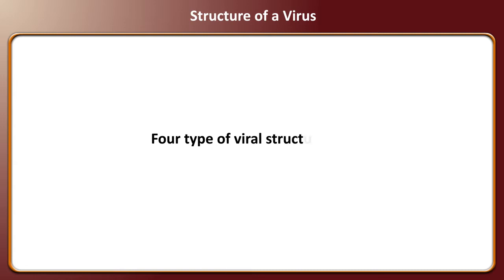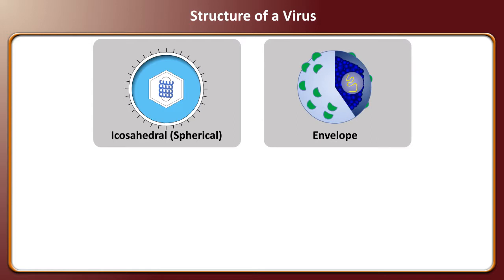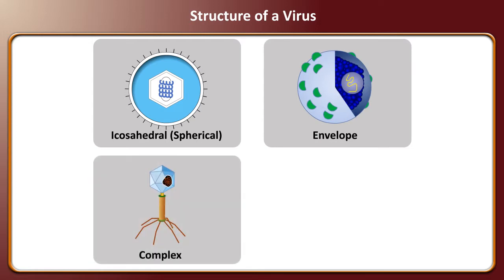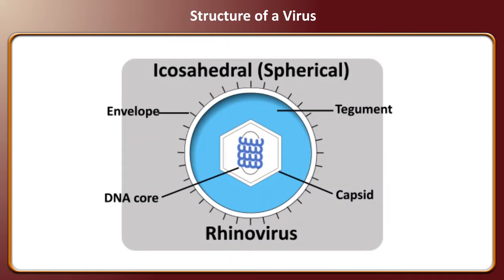Virus structure. Four types of virus structures are: icosahedral, envelope, complex, and helical. The icosahedral virus particle is almost spherical in shape. The rhinovirus is an example of an icosahedral virus.